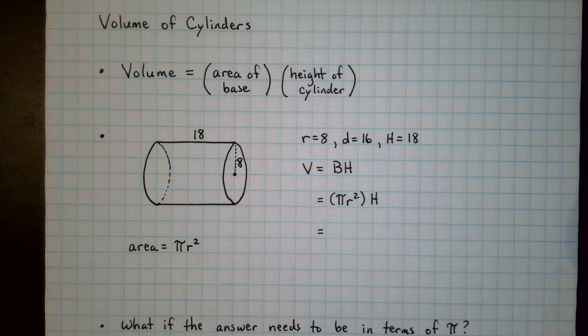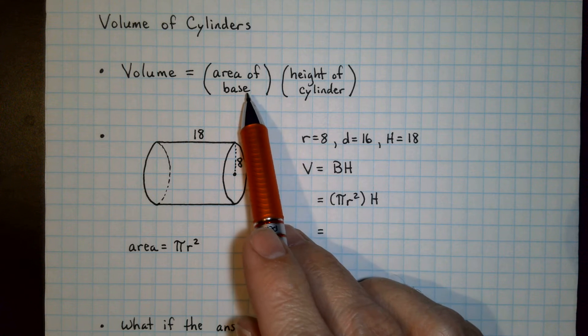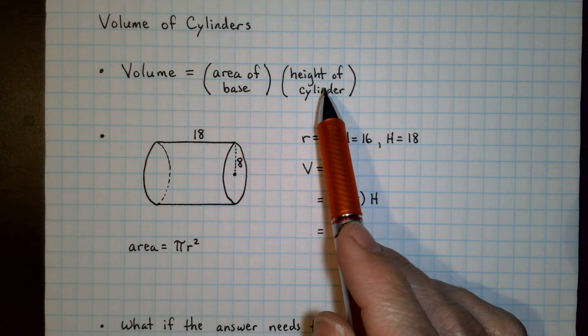Welcome back. We're going to find the volume of a cylinder. The formula for the volume of a cylinder is the same as the volume of a prism. It's the area of the base times the height of the cylinder.